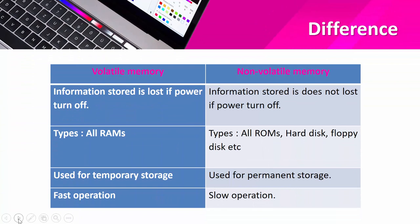Another difference to know is between volatile memory and non-volatile memory. Volatile memory means information stored in it is lost if the power is turned off. Non-volatile memory is permanent — information stored in it is not lost when the power is turned off. Examples of volatile memory are all types of RAM. Examples of non-volatile memory are ROM, hard disk, and floppy disk. Volatile memory is used for temporary storage and performs fast operations, while non-volatile memory is used for permanent storage and performs slower operations.